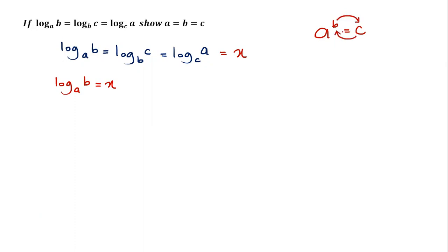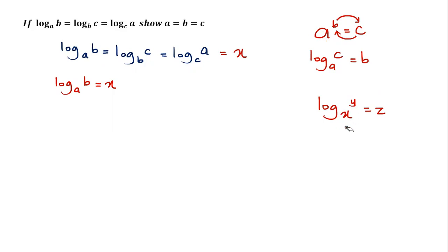When you switch, the base remains as the base — you cannot disturb the base. So the base here stays as log_a; only b and c switch places. Similarly, if log_x(y) = z, don't disturb the base; just exchange the two places to get x^z = y.